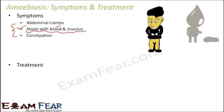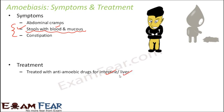In many cases, the amoeba also enters the bloodstream and reaches other organs like the liver, causing damage there as well. Treatment involves anti-amoebic drugs for the intestine and liver, since these are the organs primarily impacted during amoebic dysentery. Good care must also be taken to ensure clean water, clean food, personal hygiene, and no flies on food.